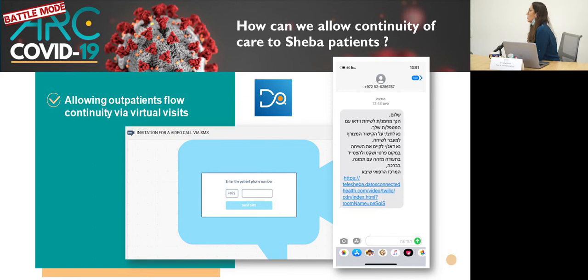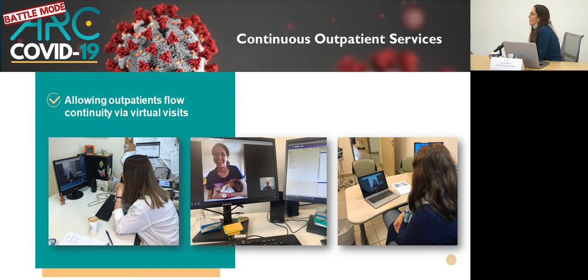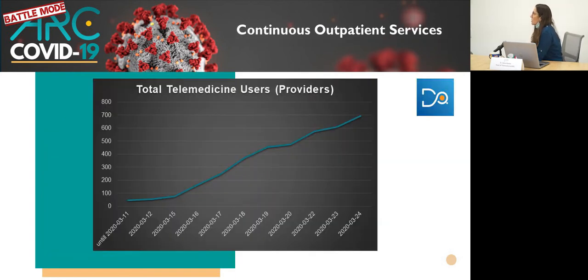The third thing that we began to understand as the measures of social distancing and lockdown were employed, is that we would have to allow continuity of care. We wanted to allow continuity of care to all the Shiba patients that are treated in Shiba and cannot come now to their outpatient clinics. And for this, we also used the Datos platform to allow us to easily communicate with the patients. We send them a text message, they only have to press on a link, and then they're directed directly to speak with their physician, and that allows us to make virtual visits instead of the in-hospital visits.